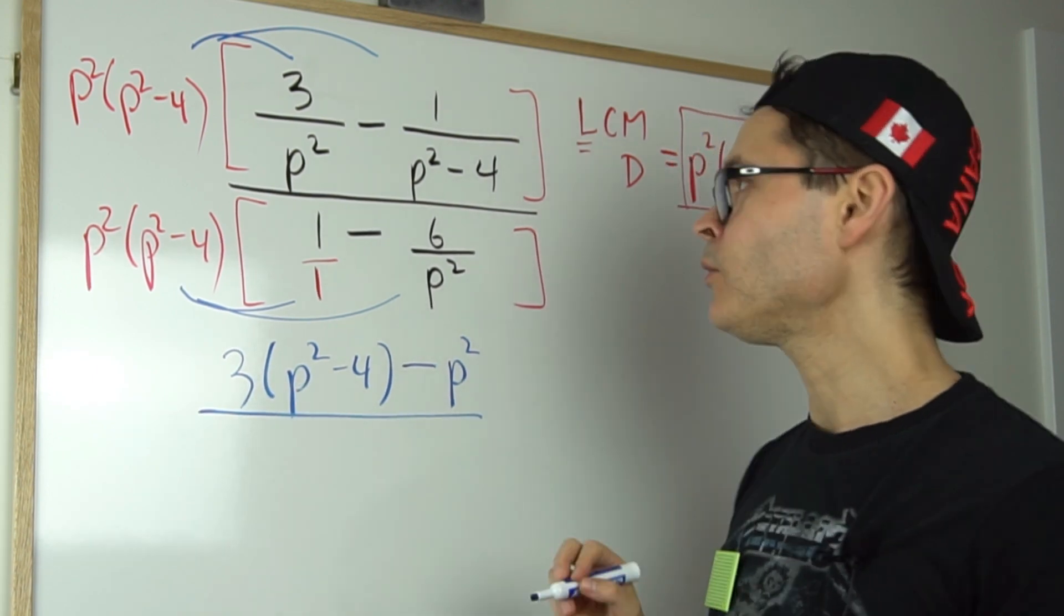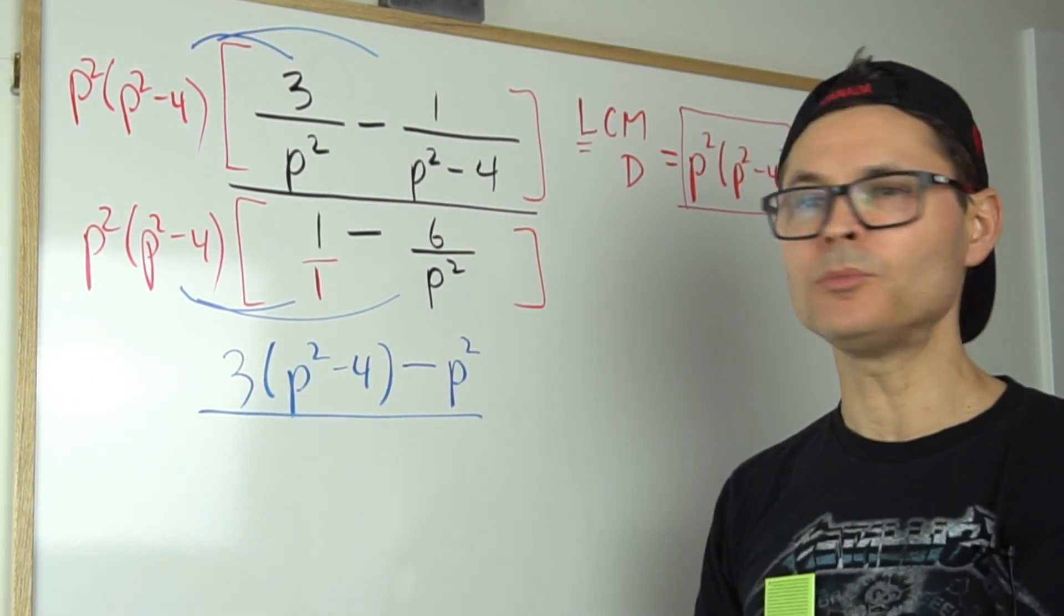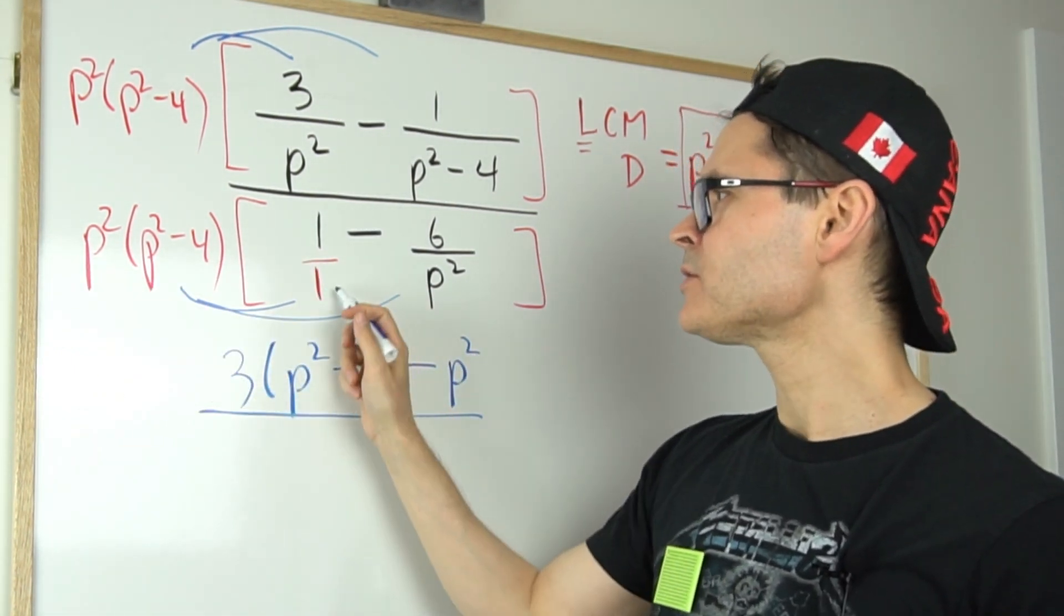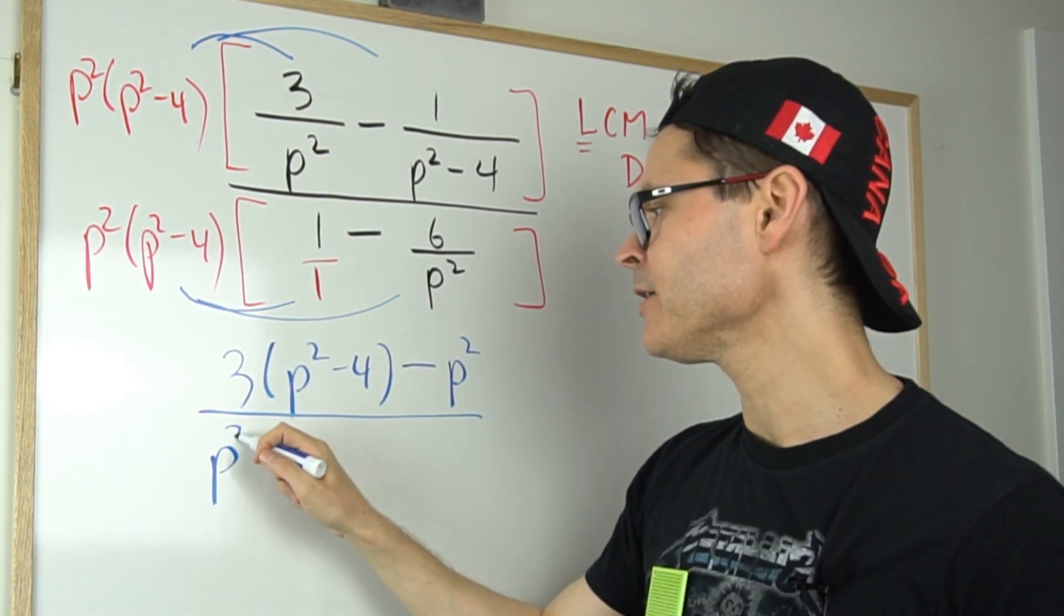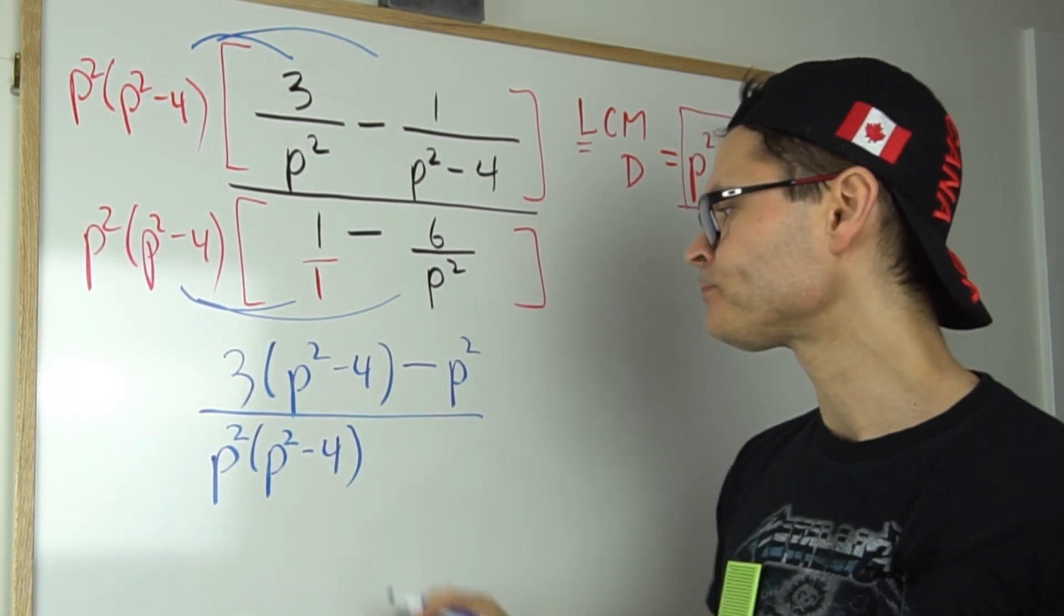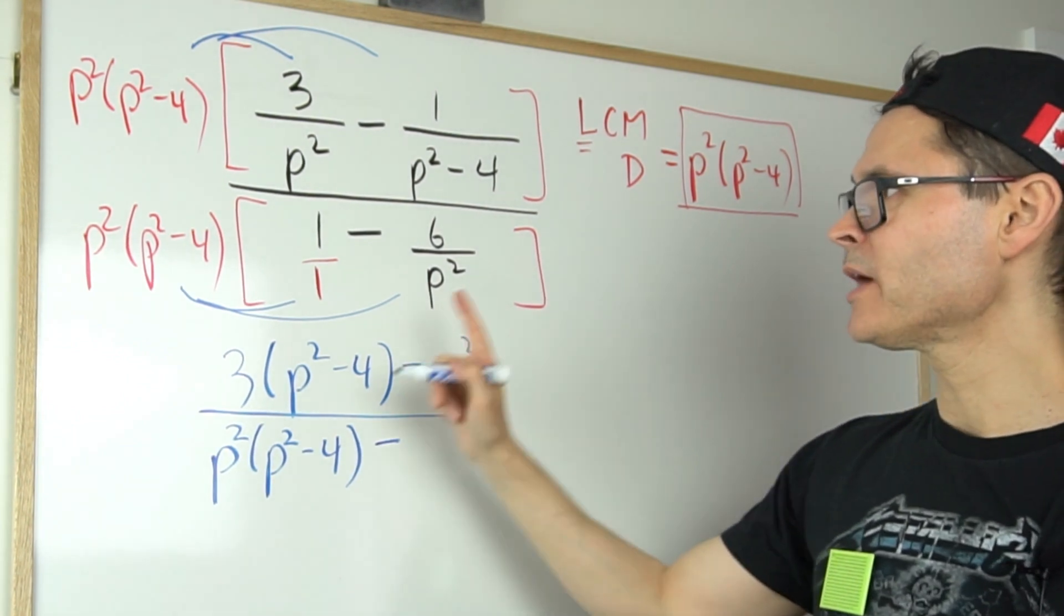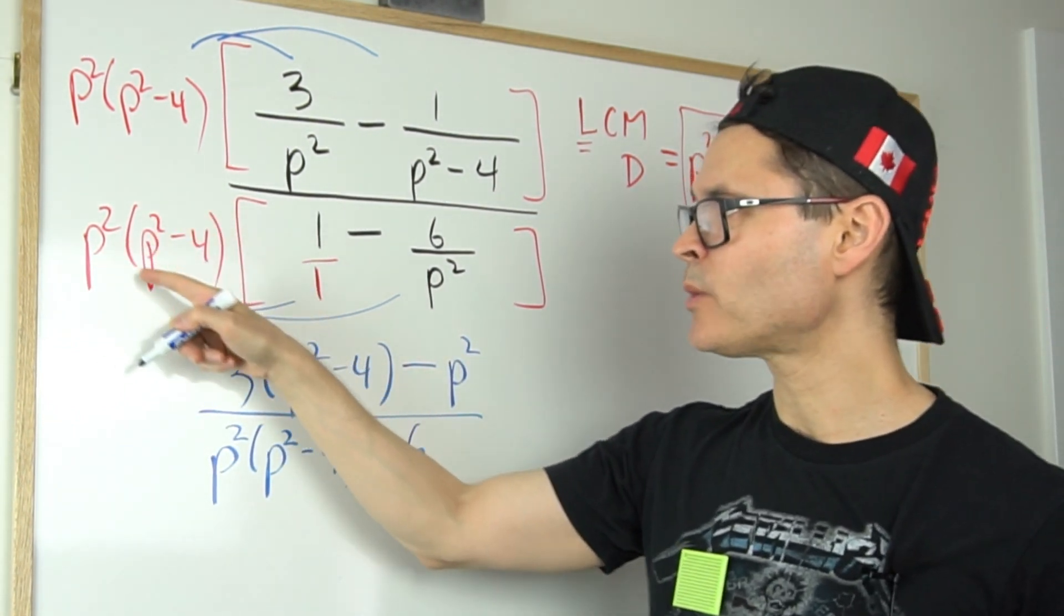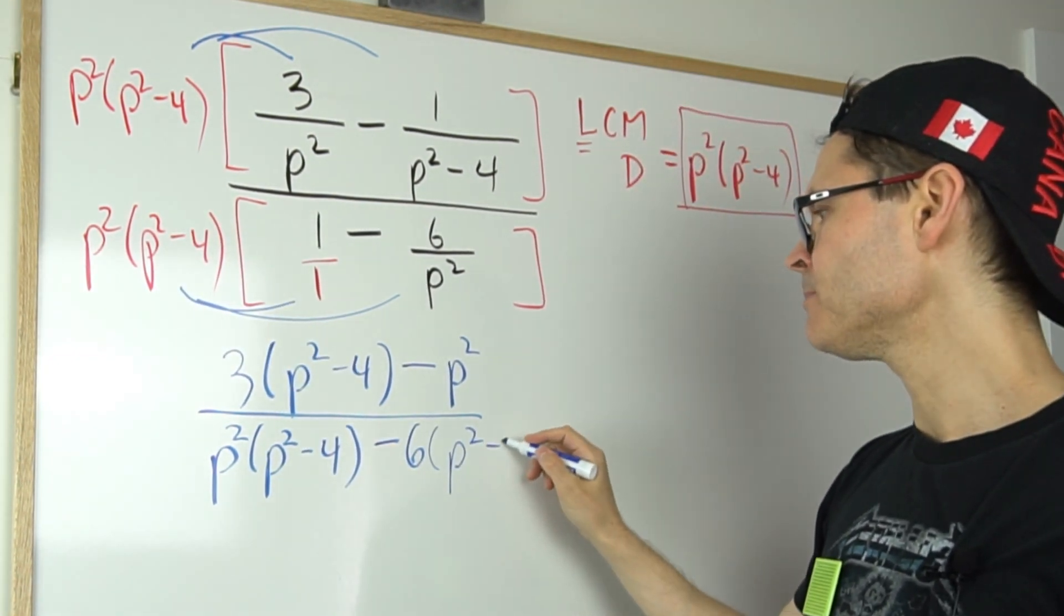That will be all over—now that's kind of nice because I cleared the denominators in the numerator. I can do that for the denominator here as well, multiplying this by this. Well, there's nothing to cancel, so in the first term I'll have to rewrite the entire p squared times p squared minus four, and then minus—the p squared cancels with the p squared, leaving a six times what's left over after cancellation, which is p squared minus four.